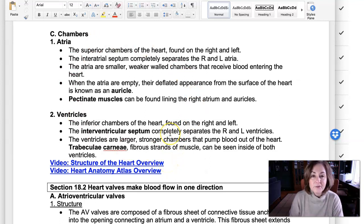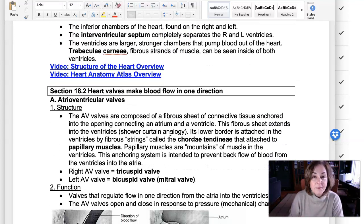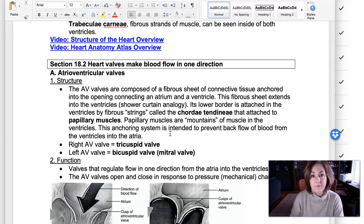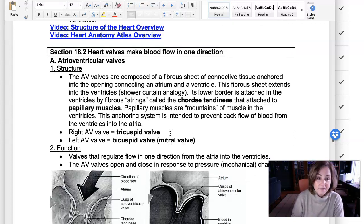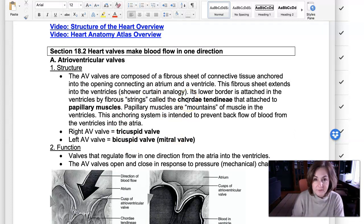So after I situate the heart as a four chambered organ, what I do from here is I talk about the valves that are located in the heart. So we have four valves in the heart, two sets of valves. One set are the atrioventricular valves that separate the atria from the ventricles.